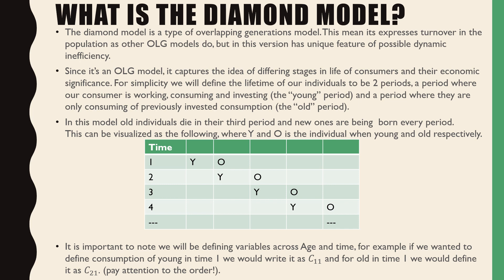As other OLG models do, but in this version it has the unique feature of possible dynamic inefficiency. Since it's an OLG model, it captures the idea of different stages in life of the consumers and their economic significance. For simplicity we will be defining the lifetime of our individuals to be two periods.